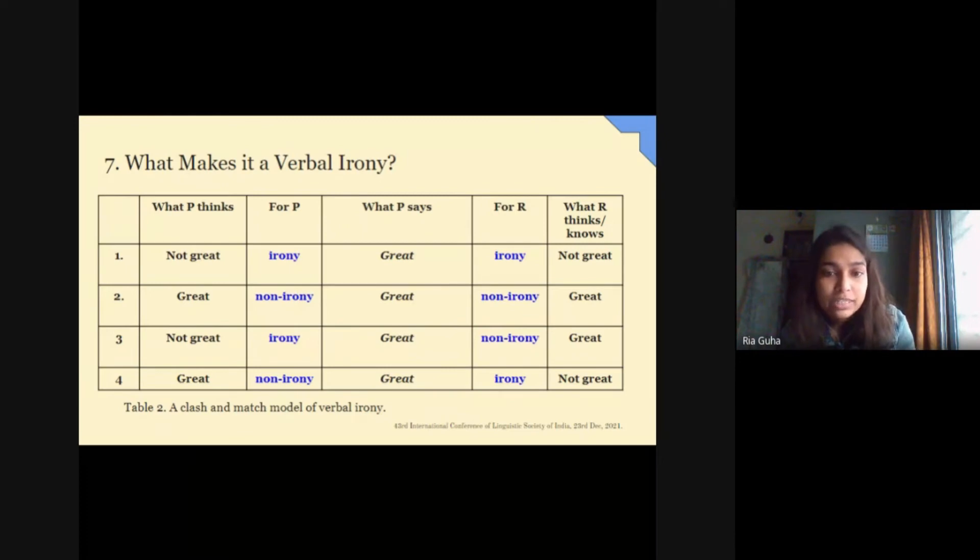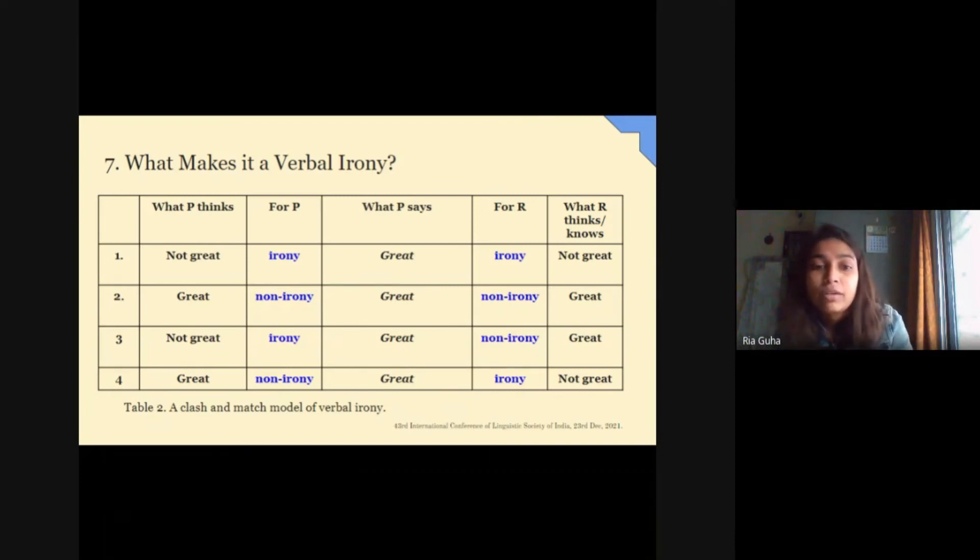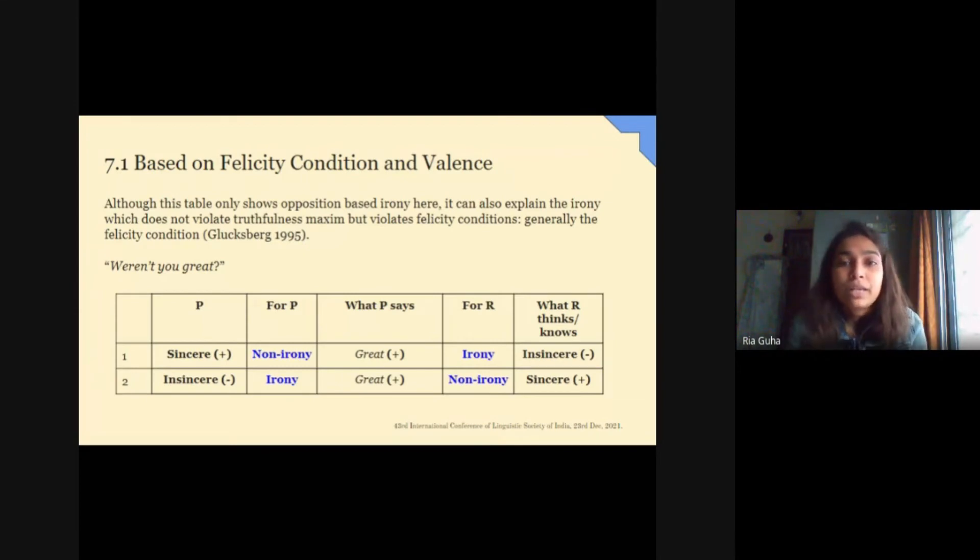And in 4, even if it is sincere and meant non-ironically, like a compliment, but it clashes with the receiver's beliefs, it will be taken as verbal irony. This model does not only explain irony based on word opposition but also those which either do not violate the truthfulness maxim but express a negative attitude, like you surely know a lot, used by Kumon, Nakamura and Glucksberg et al. And also those which rather violate the sincerity condition, as you can see in this table.